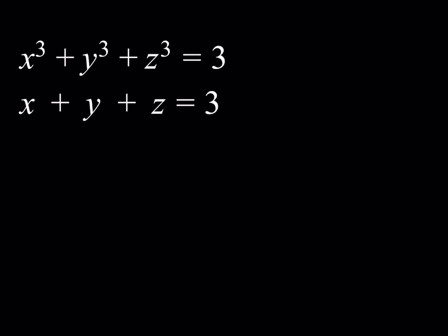We're going to be using some identities. The first thing I want to use is: if I cube x plus y plus z, I'm going to show you what that looks like. I'd like to do it in a smart way — treat x plus y as a quantity and cube it like an (a + b)³, and use some shortcuts.